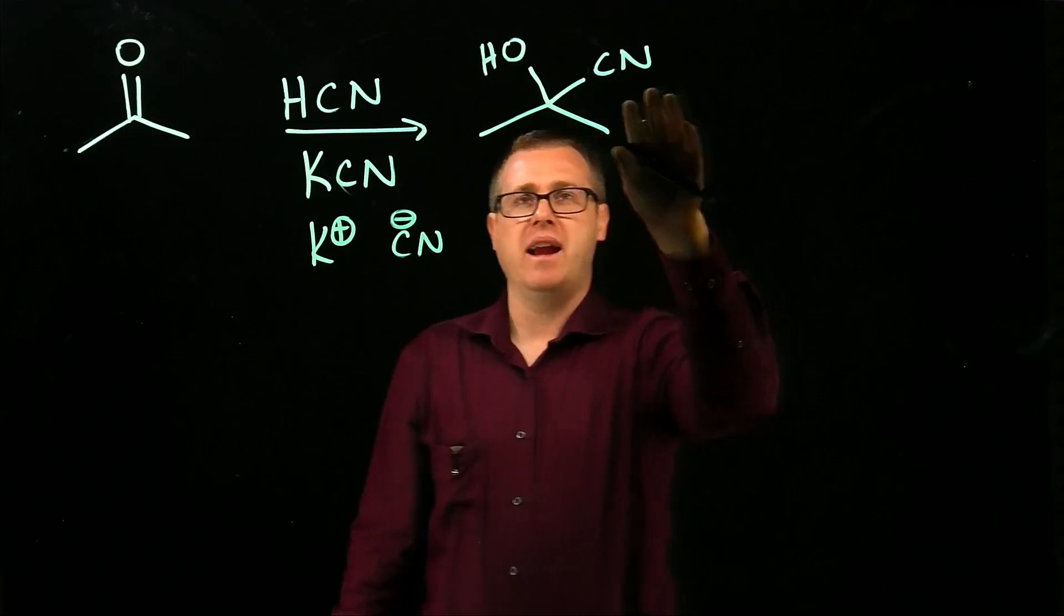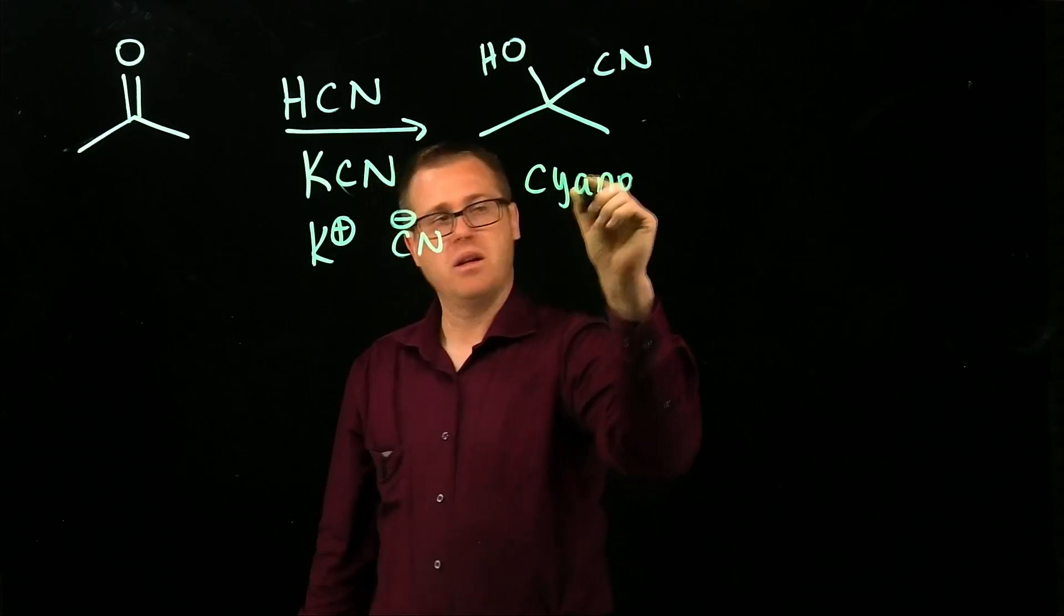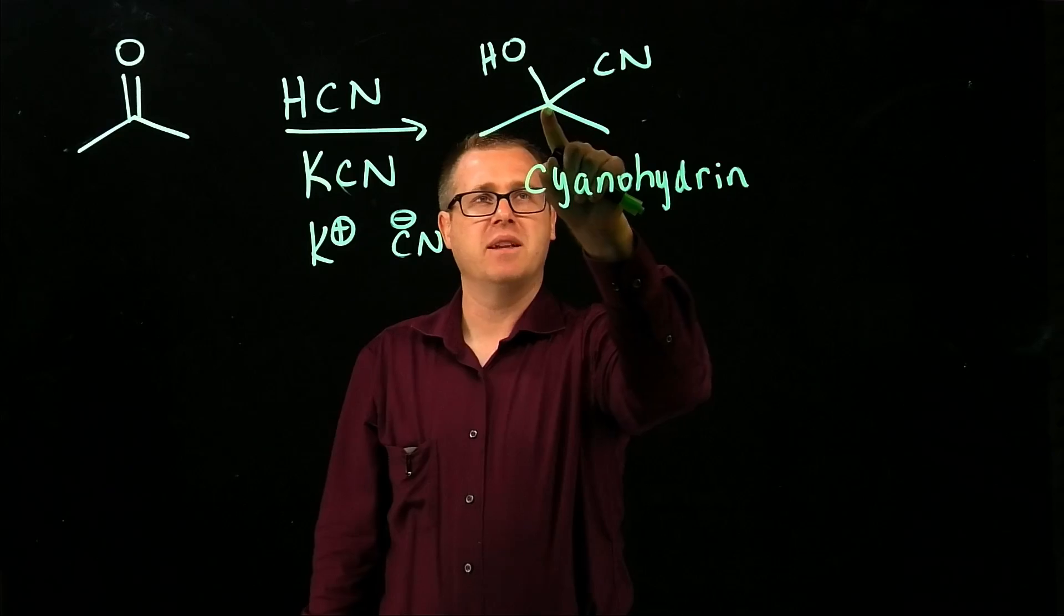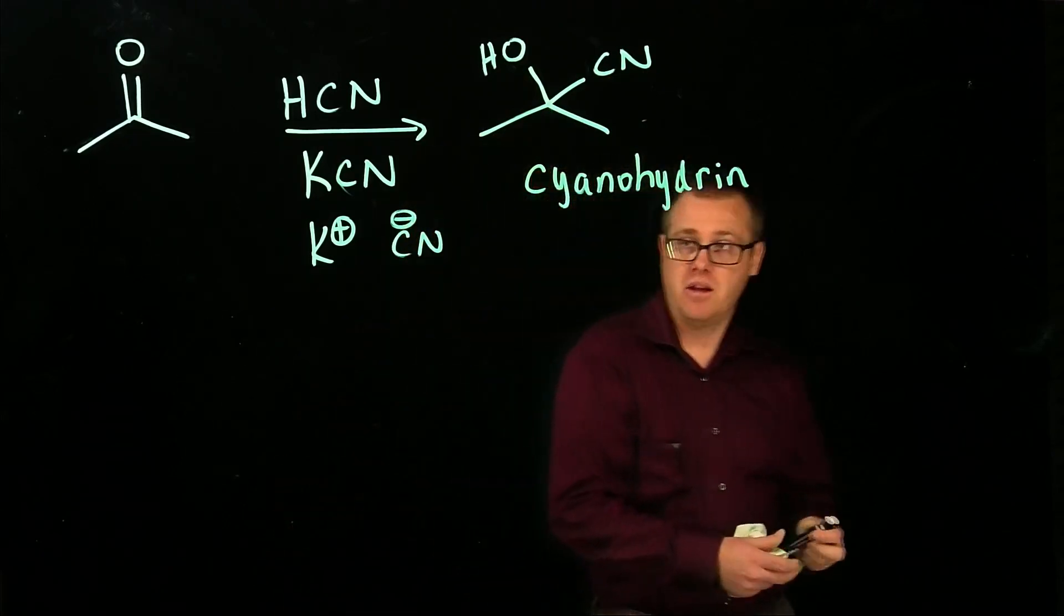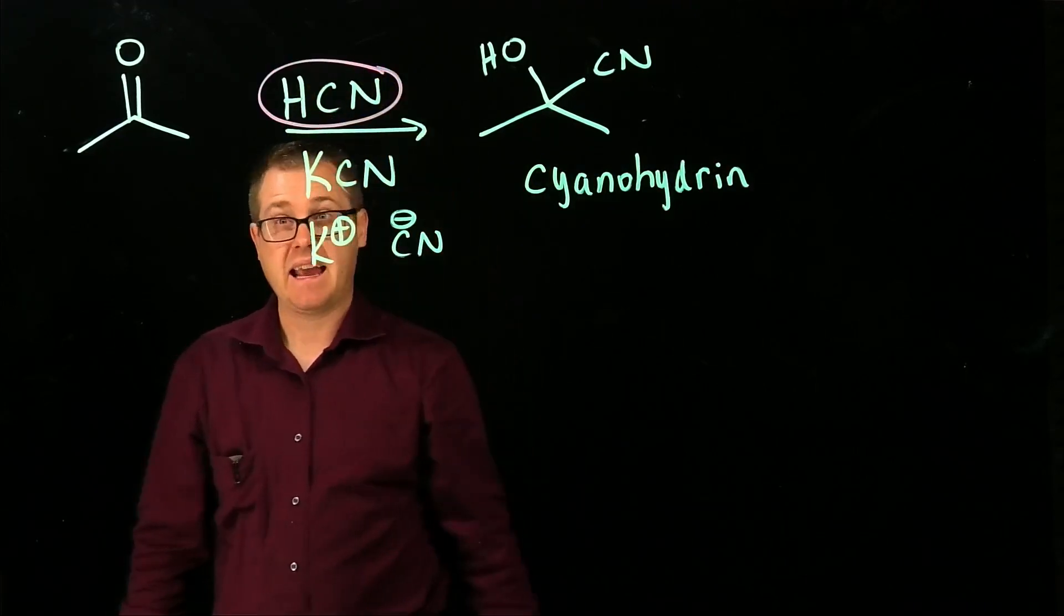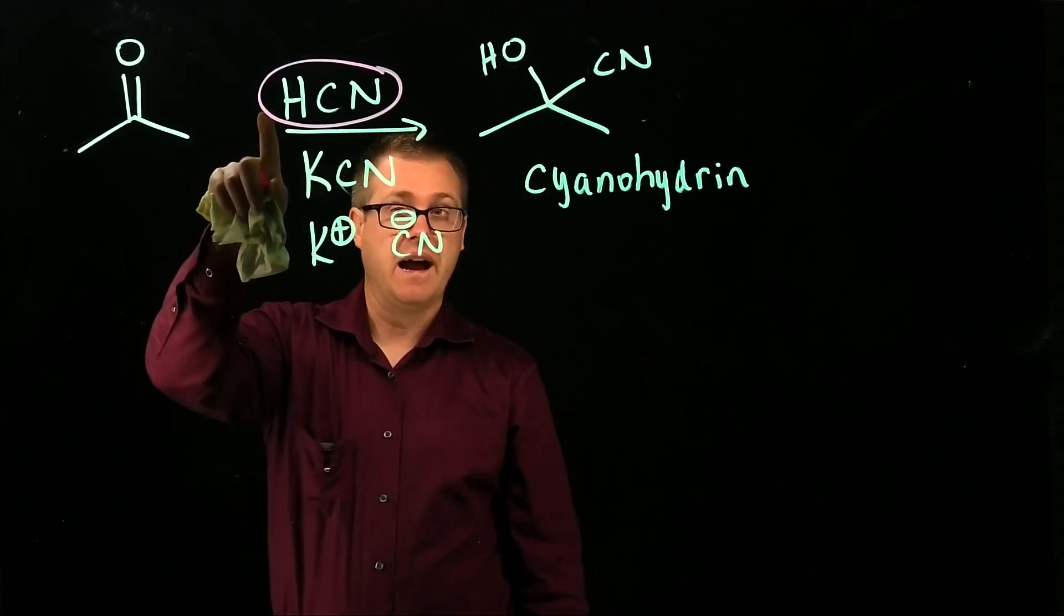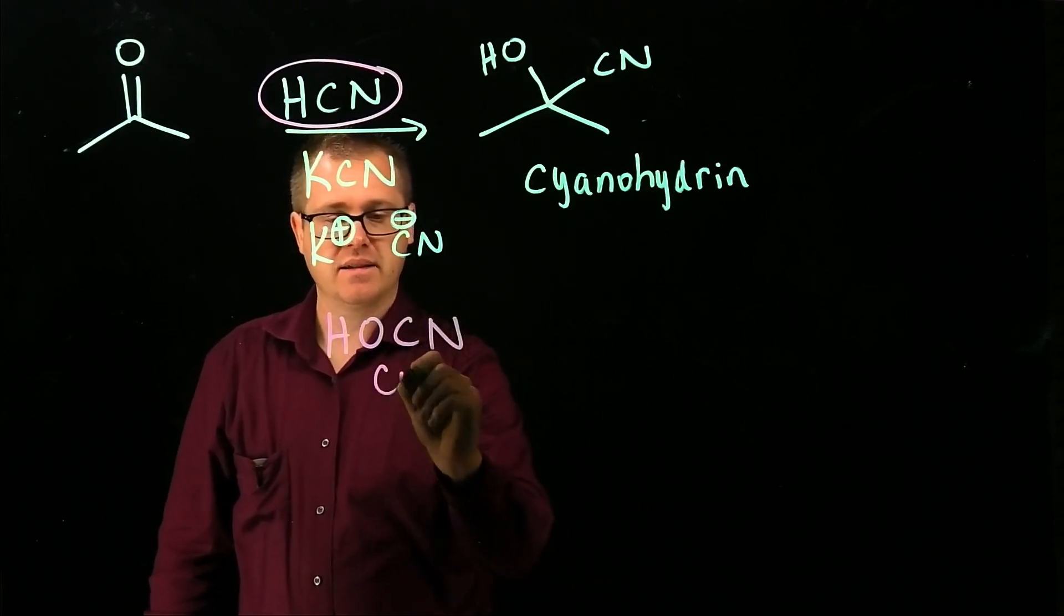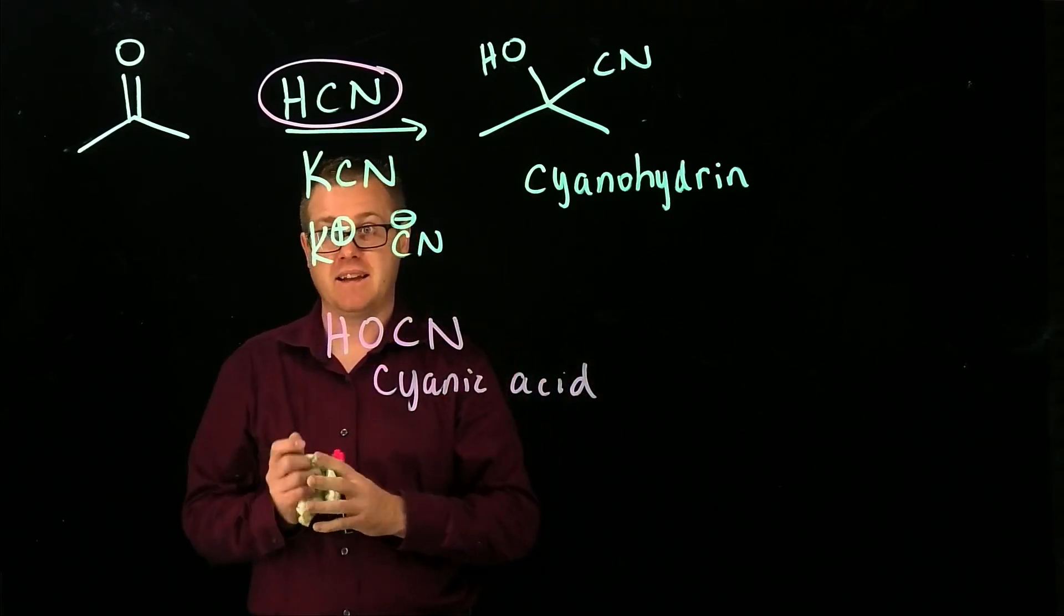So now we have a little bit of base, that's going to be our base source. And then we generate our product, which is called a cyanohydrin. So when you have a carbon atom that's connected to an alcohol and a nitrile, we call that a cyanohydrin. Now, I misspoke when I called this compound cyanic acid. I did say that, and that is wrong. That species that I just circled is called hydrogen cyanide. Cyanic acid looks like this. So that is cyanic acid. They're two different compounds.